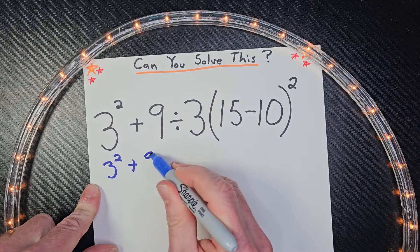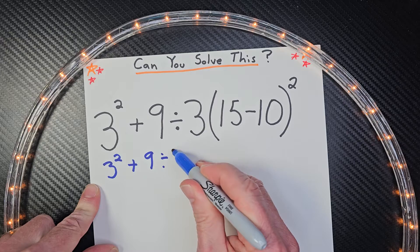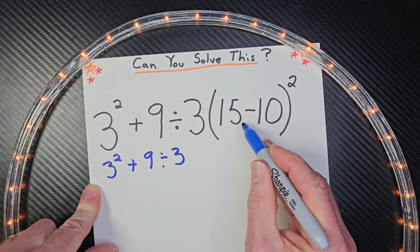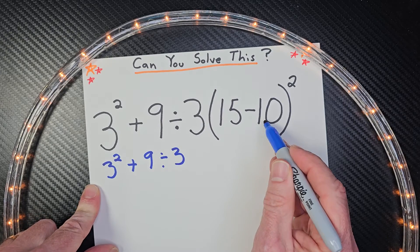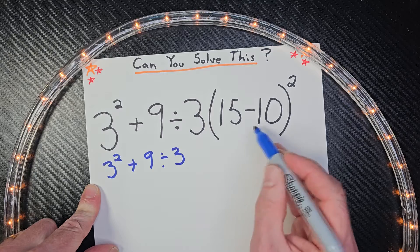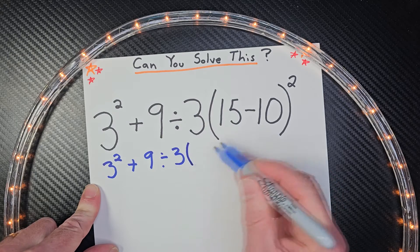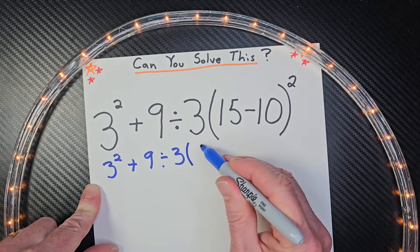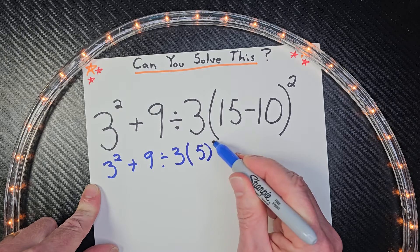So I'm going to go ahead and rewrite this. So 3 to the second power plus 9 divided by 3. And I'm going to go ahead and do what's inside parentheses here. So it's 15 minus 10, which would equal, what is it? 5 to the second power.